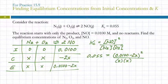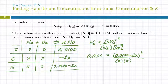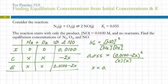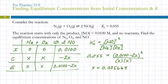In the solver, put 0.055 on one side and (0.0100 minus 2X)² divided by X² on the other. Starting the solver gives X equal to approximately 0.0056. Keep enough significant figures — rounding to 0.006 this early might not be a good idea.